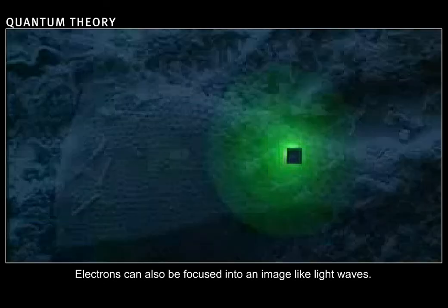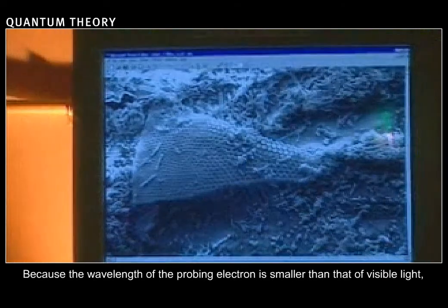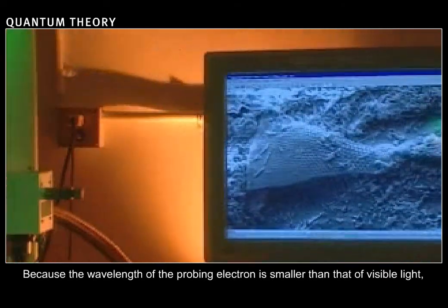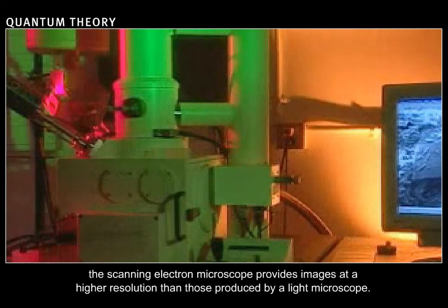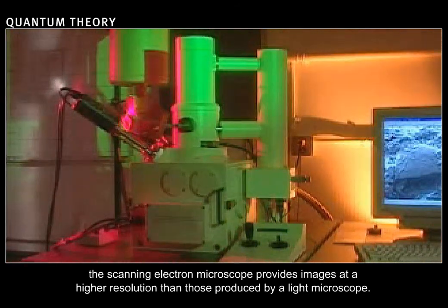Electrons can also be focused into an image like light waves. Because the wavelength of the probing electron is smaller than that of visible light, the scanning electron microscope provides images at a higher resolution than those produced by a light microscope.